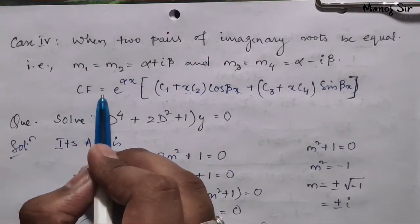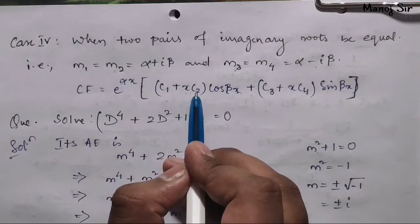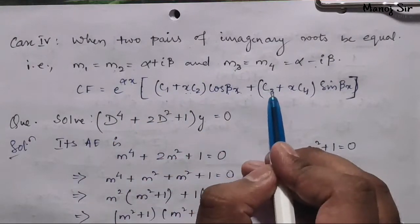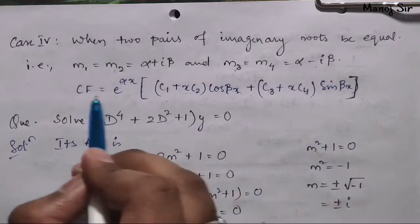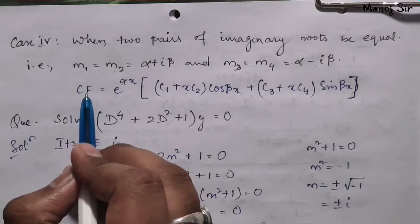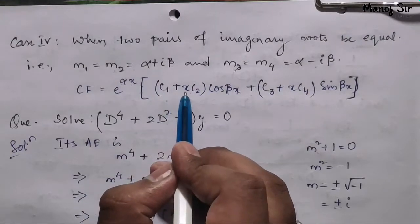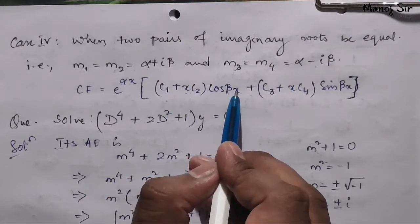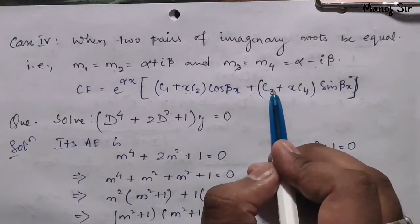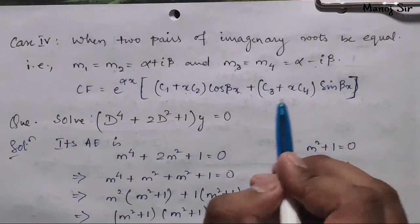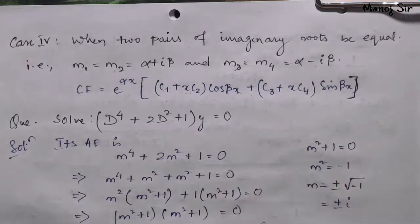If this is the case, then the complementary function (CF) is: e to the power alpha·x, multiplied by (c1 + x·c2)·cos(beta·x) plus (c3 + x·c4)·sin(beta·x). That is the complementary function formula for two pairs of equal imaginary roots.